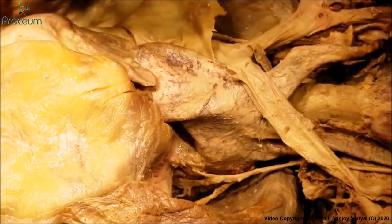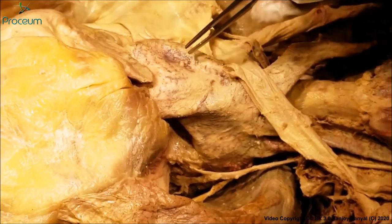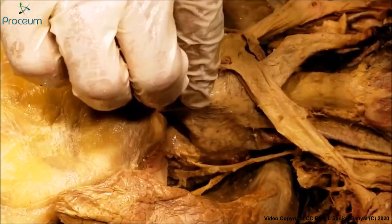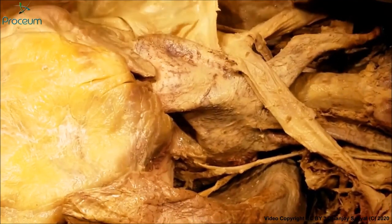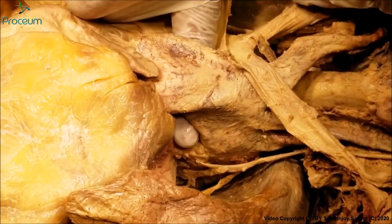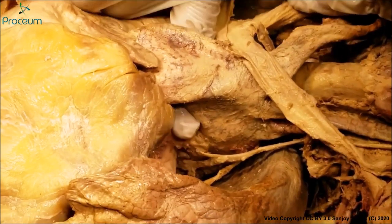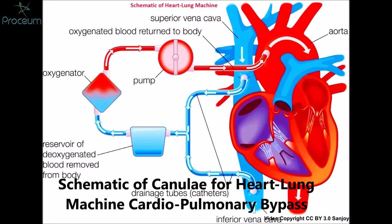The transverse pericardial sinus is used by cardiothoracic surgeons to cannulate the aorta and the superior vena cava prior to open heart surgery, in order to connect these great vessels to the heart-lung machine. This schematic diagram shows the heart-lung machine draining from the venous end to the arterial end. That is the surgical importance of the transverse pericardial sinus.